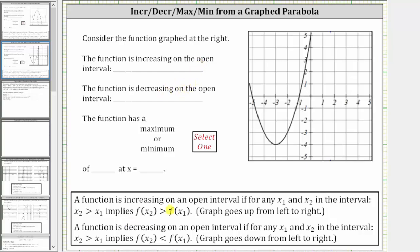Formally, we say a function is increasing on an open interval if for any x₁ and x₂ in the interval, x₂ greater than x₁ implies f(x₂) greater than f(x₁), which means the graph goes uphill from left to right. The function is decreasing on an open interval if for any x₁ and x₂ in the interval, x₂ greater than x₁ implies f(x₂) less than f(x₁), which means the graph goes downhill from left to right.